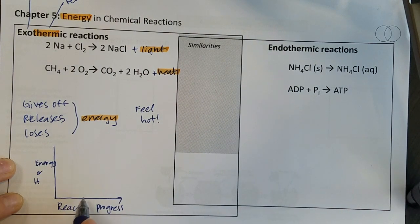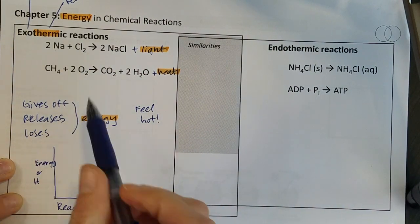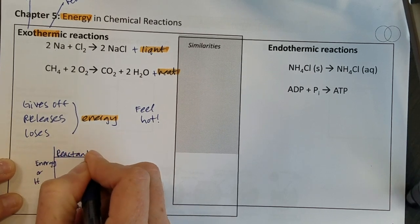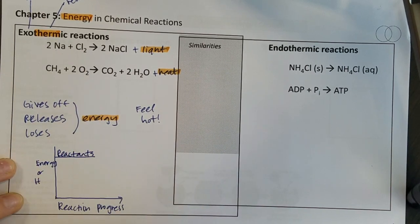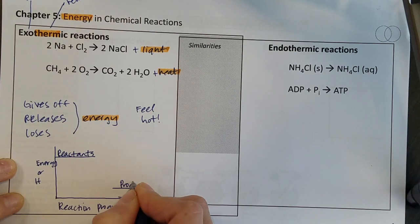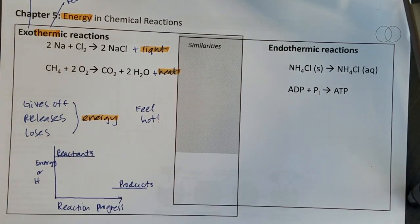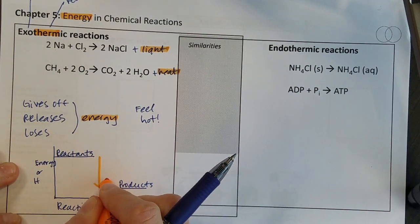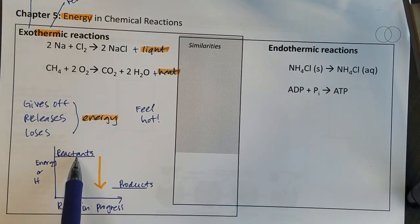In other words the reaction starts here and is progressing. So in an exothermic reaction we start with our reactants having a lot of energy tied up in their bonds and then after the reaction proceeds we see that our energy falls.